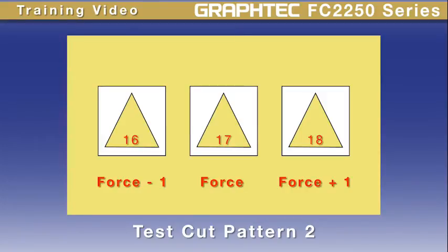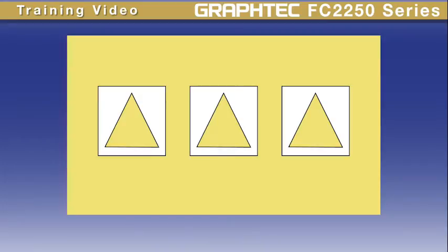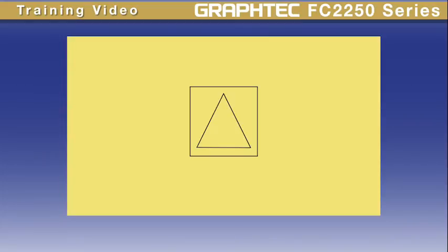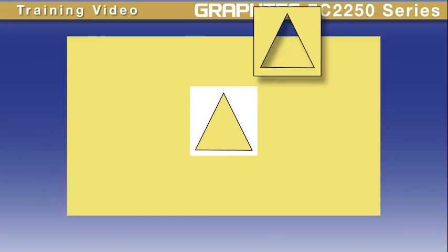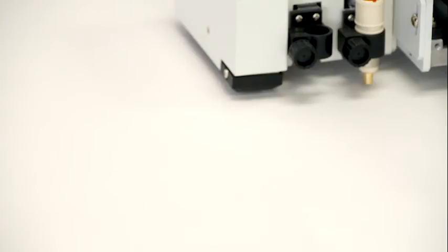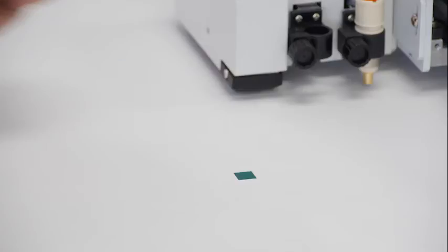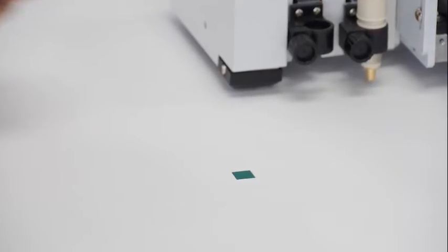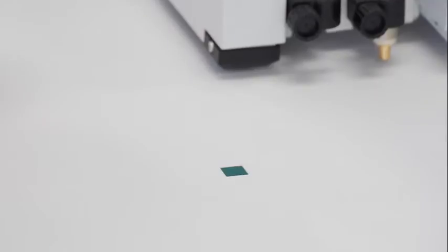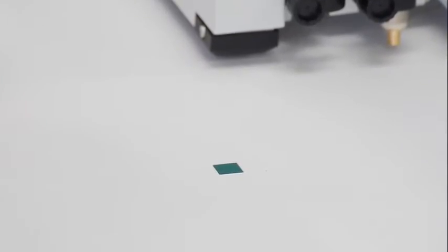These three patterns provide a way to more accurately determine the correct force value. For materials with a backing, such as self-adhesive vinyl, first remove the square — as it is removed, it should leave the triangle behind. When cutting a test pattern on materials that are to be cut through, such as thicker materials, the pattern should just pop out leaving clean edges. When test cutting thicker materials, as long as the square pops out easily the cutting force is set correctly. If it doesn't pull out easily, increase the force by one or two.